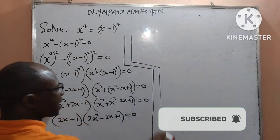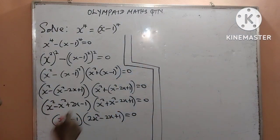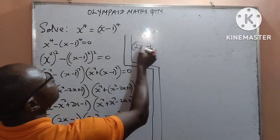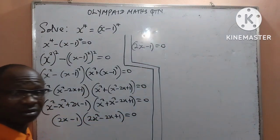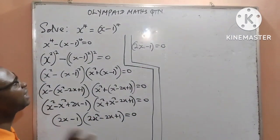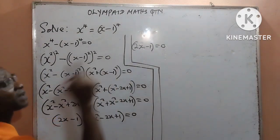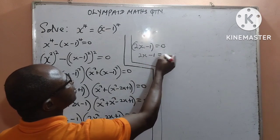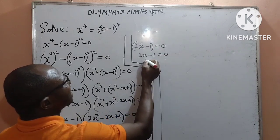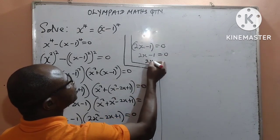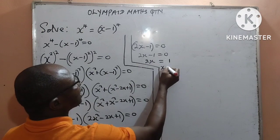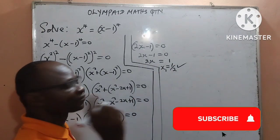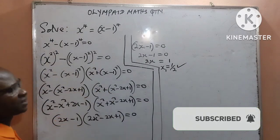From the first bracket, 2x minus 1 equals 0, therefore 2x equals 1, and x equals 1 over 2. That is our first answer for the value of x.